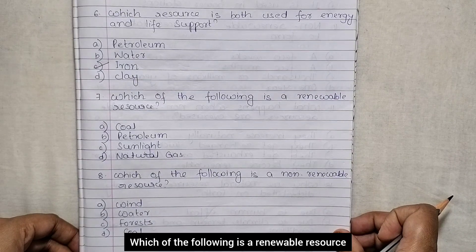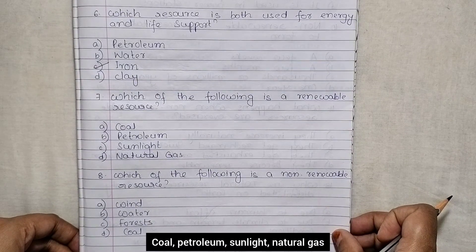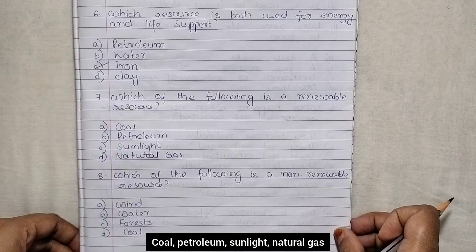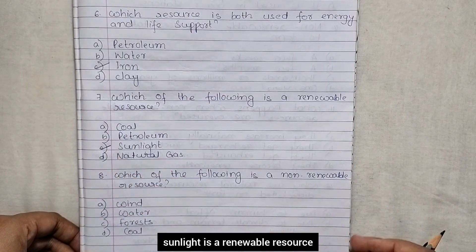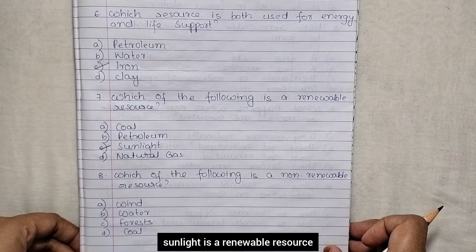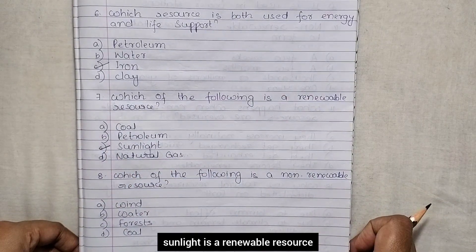Which of the following is a renewable resource? Options are coal, petroleum, sunlight, natural gas. Sunlight is a renewable resource.